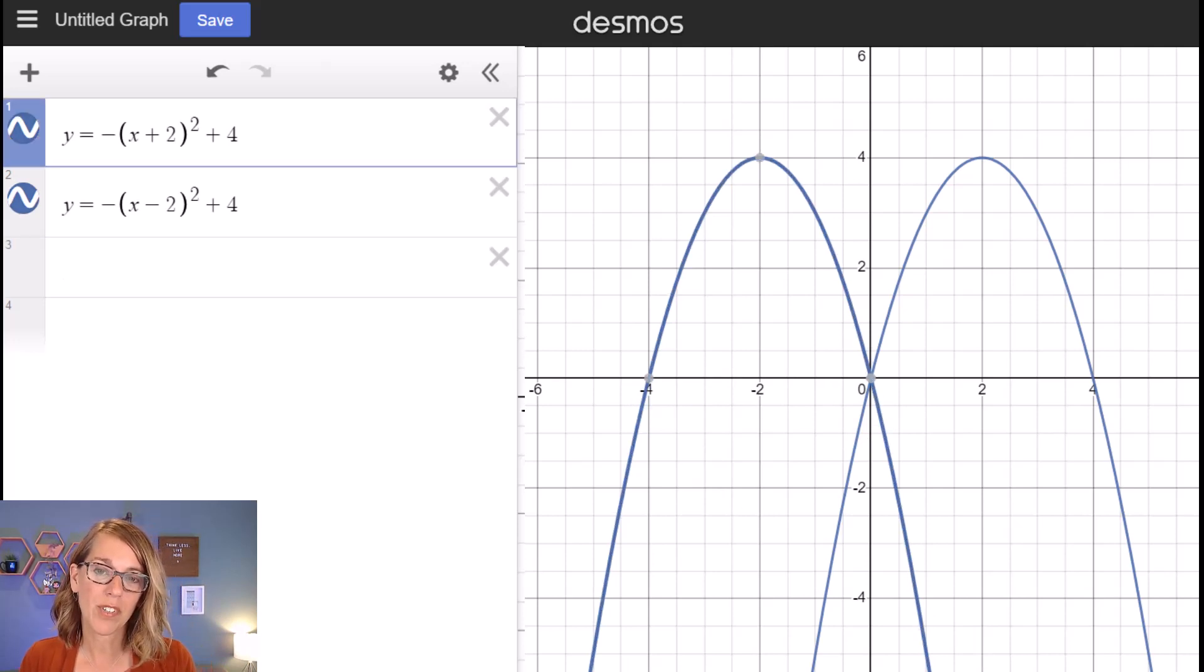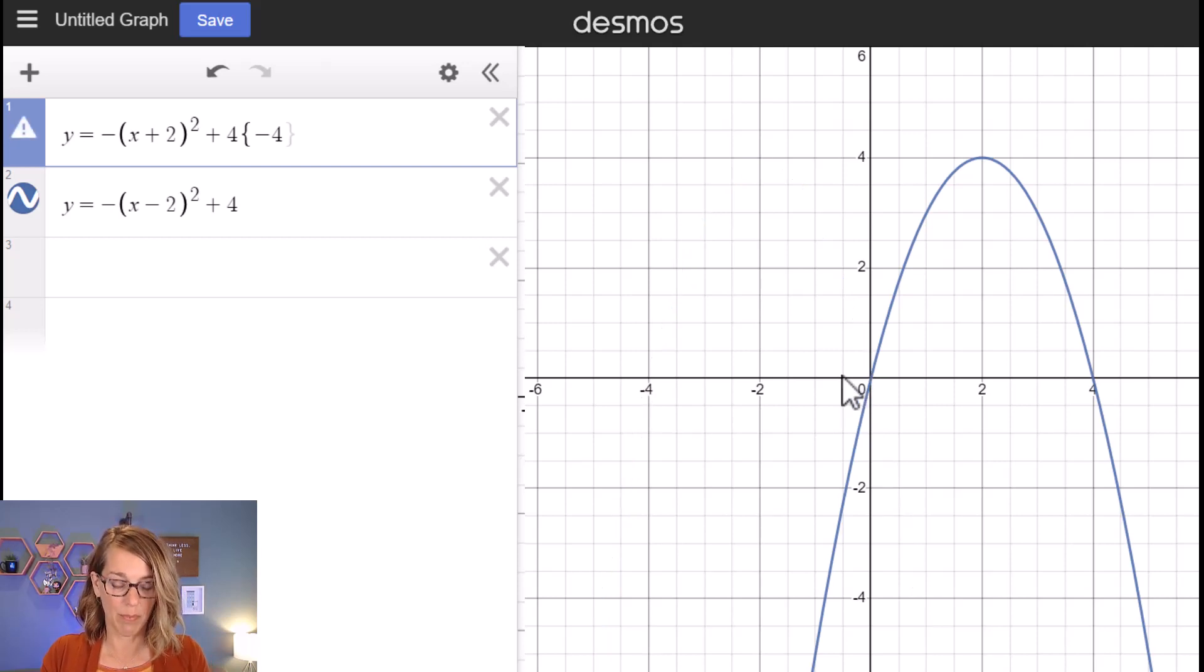To do the domain restrictions I need to use my curly brackets and the curly brackets on my keypad are right next to the letter p. So I'm going to go shift to get a curly bracket there and for this first curve here I want my x's between negative four and zero. So I'm going to go negative four is the smallest less than x less than zero and it gives me just that upper portion.